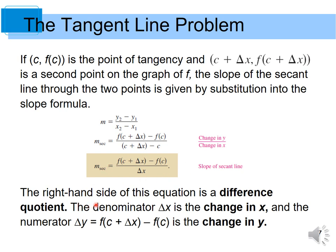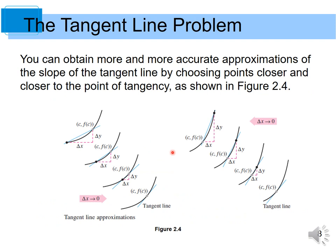The right side of this equation is a difference quotient. The denominator delta x is the change in x, and the numerator delta y is the change in y. You can obtain more and more accurate approximations of the slope of the tangent line by choosing points closer and closer to the point of tangency.